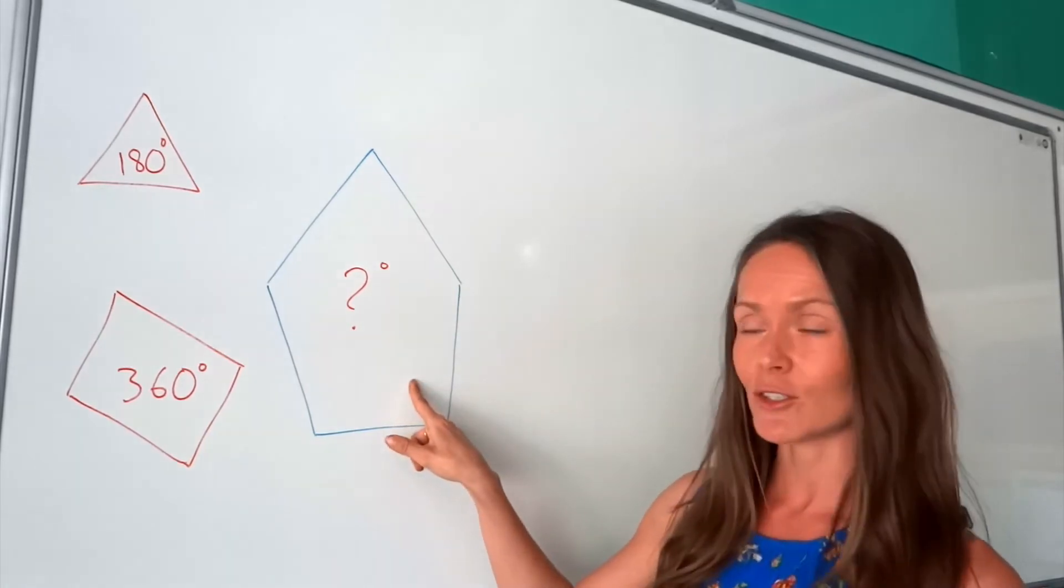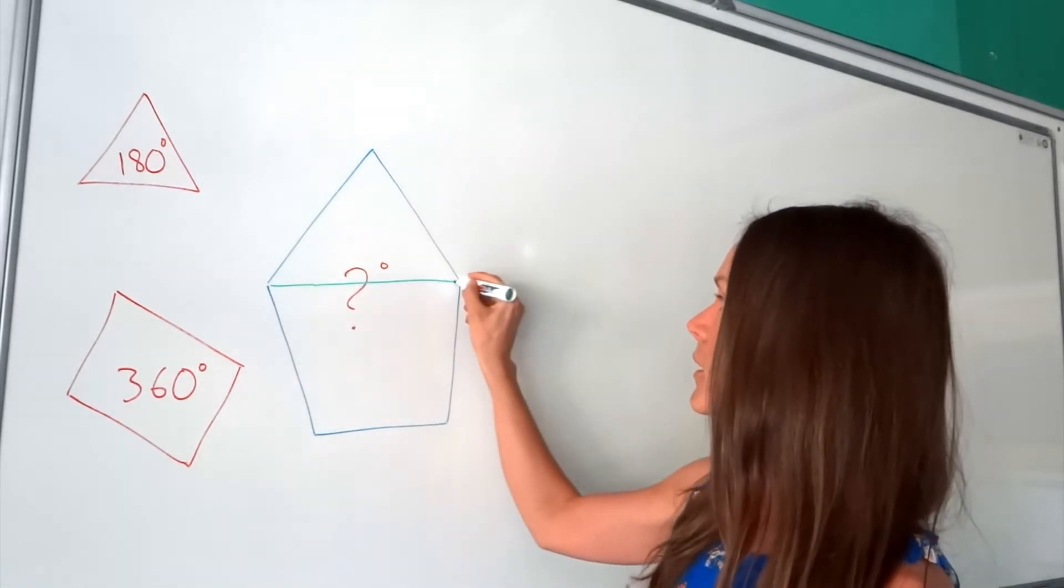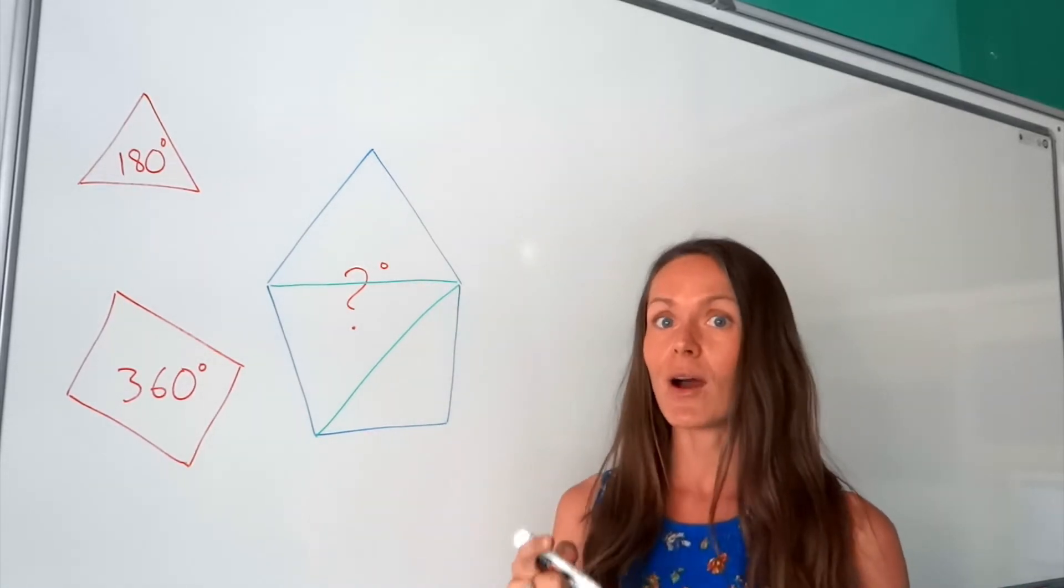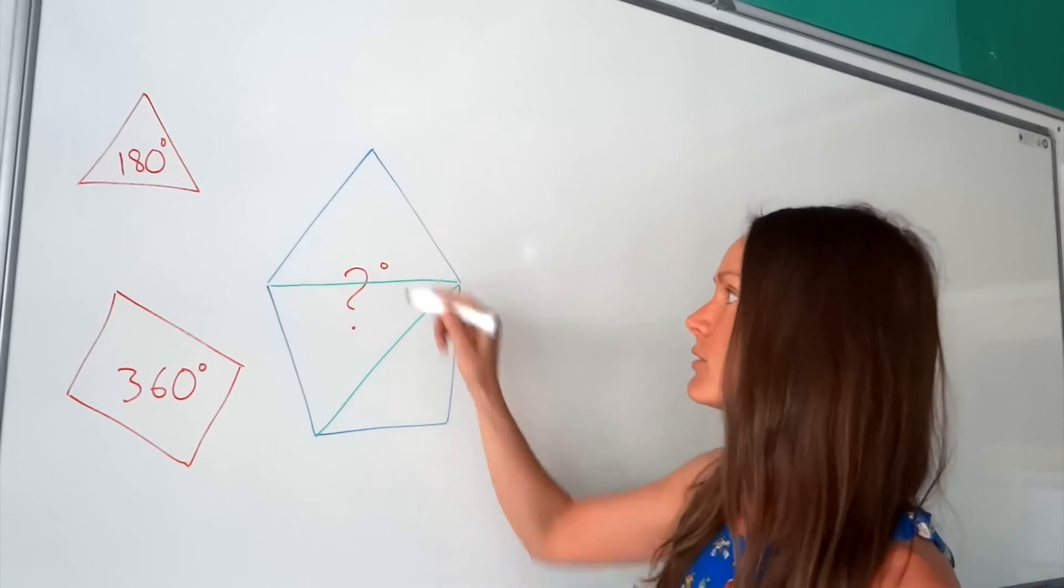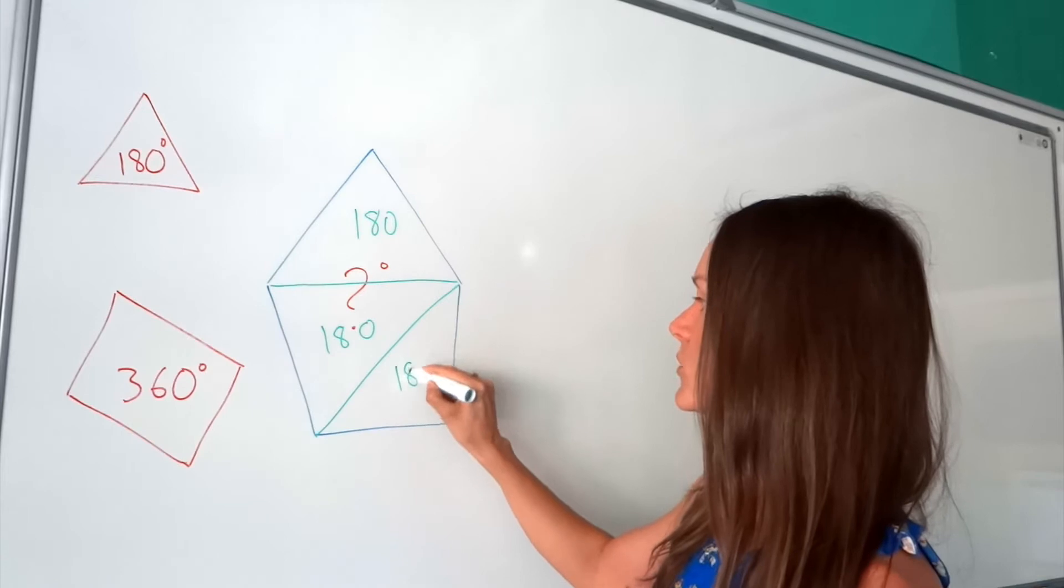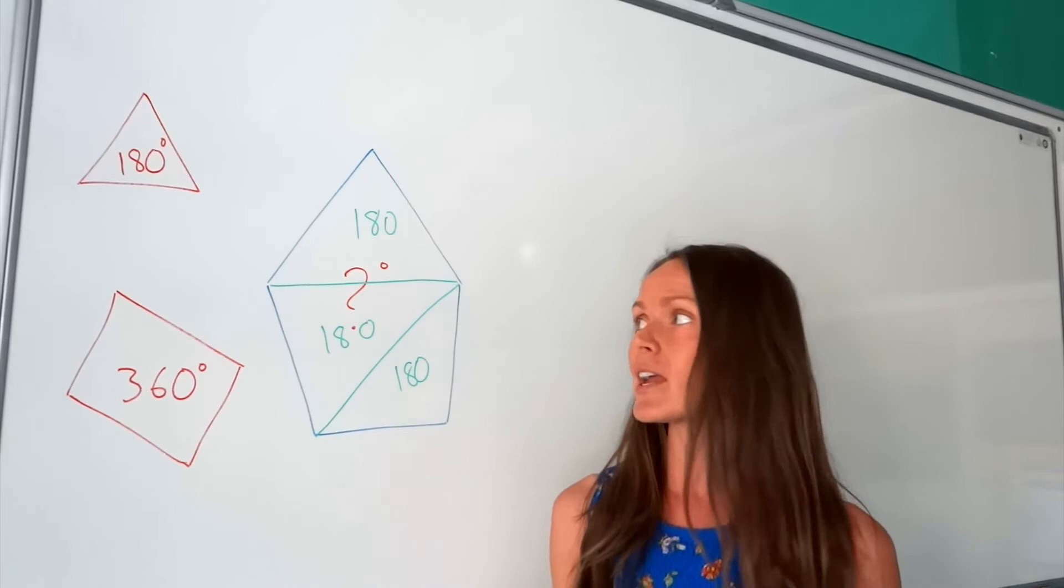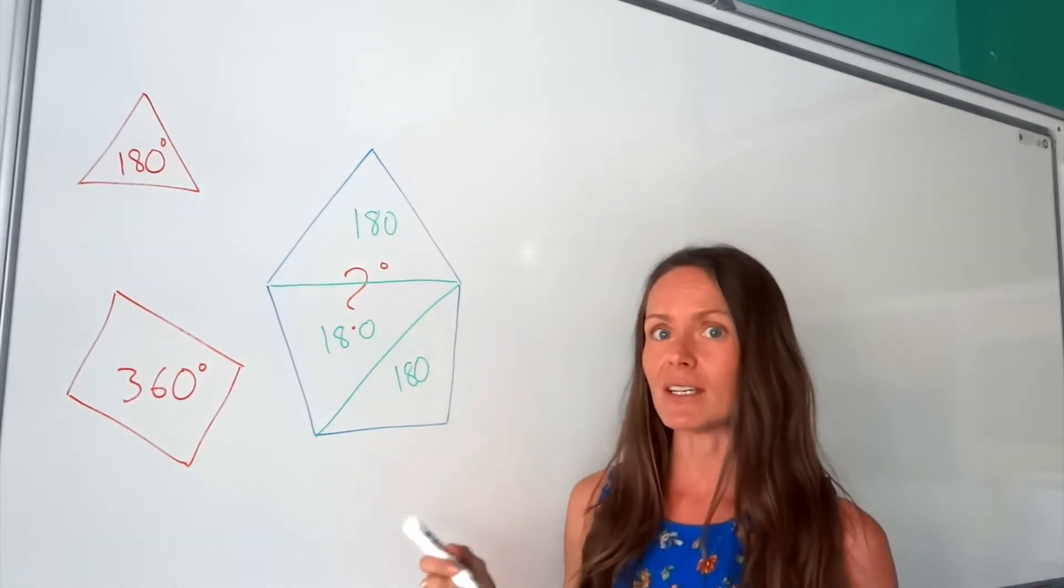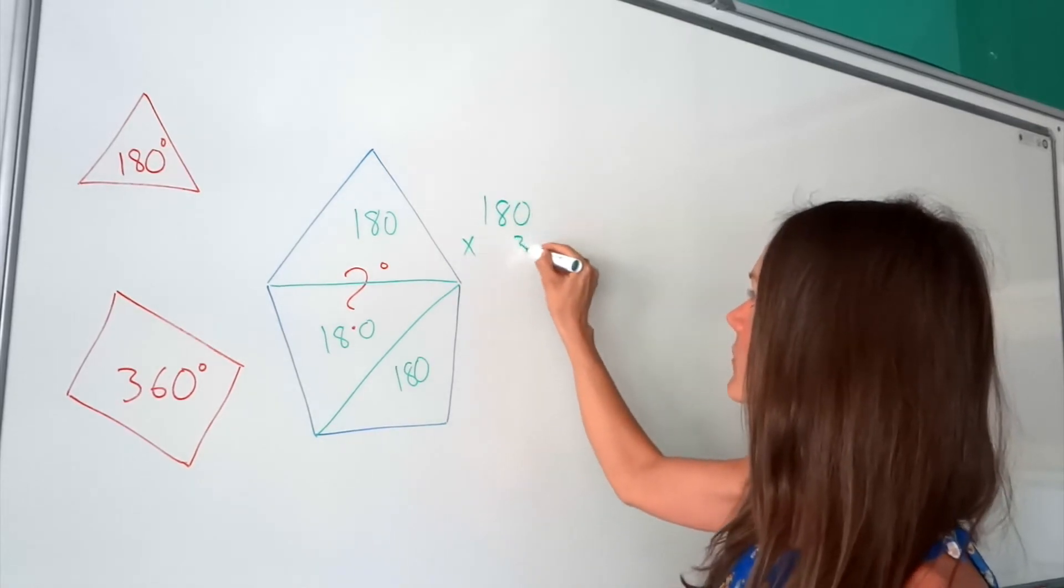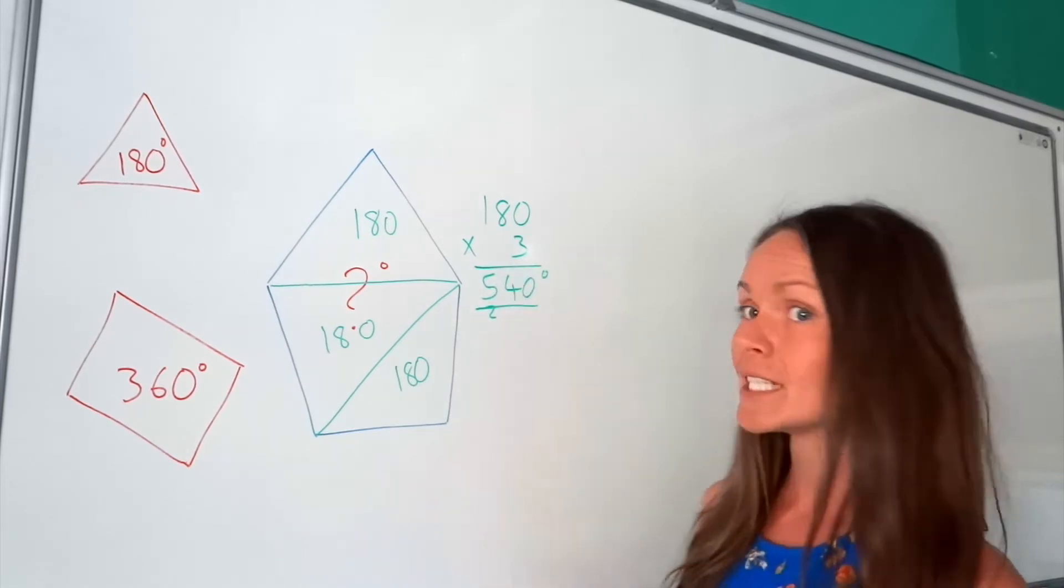So here I've got a pentagon and I'm going to split it up into three triangles because I know that in one triangle I have 180 degrees. So in this one there's 180, in this one there's 180, and also in this one. So this pentagon actually consists of three triangles. So if I multiply the number of degrees, 180 for one triangle, if I multiply that by three, it gives me 540 degrees.